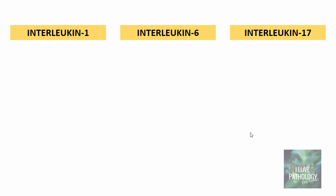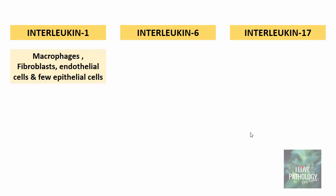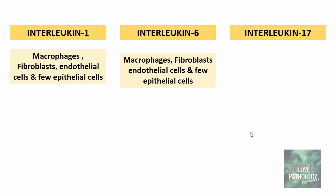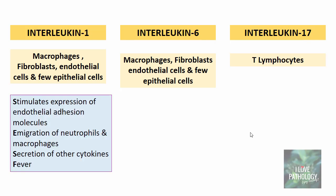Interleukin 1 is produced by macrophages, fibroblasts, endothelial cells, and few epithelial cells. Interleukin 6 is also produced by these cells, whereas interleukin 17 is produced by T lymphocytes. The first most important function of IL-1 is it stimulates the expression of endothelial adhesion molecules — the first important step being leukocyte adhesion in the cellular events of acute inflammation. The second important function is emigration of neutrophils and macrophages. Third, IL-1 can help in the synthesis of other cytokines, for example interleukin 2.